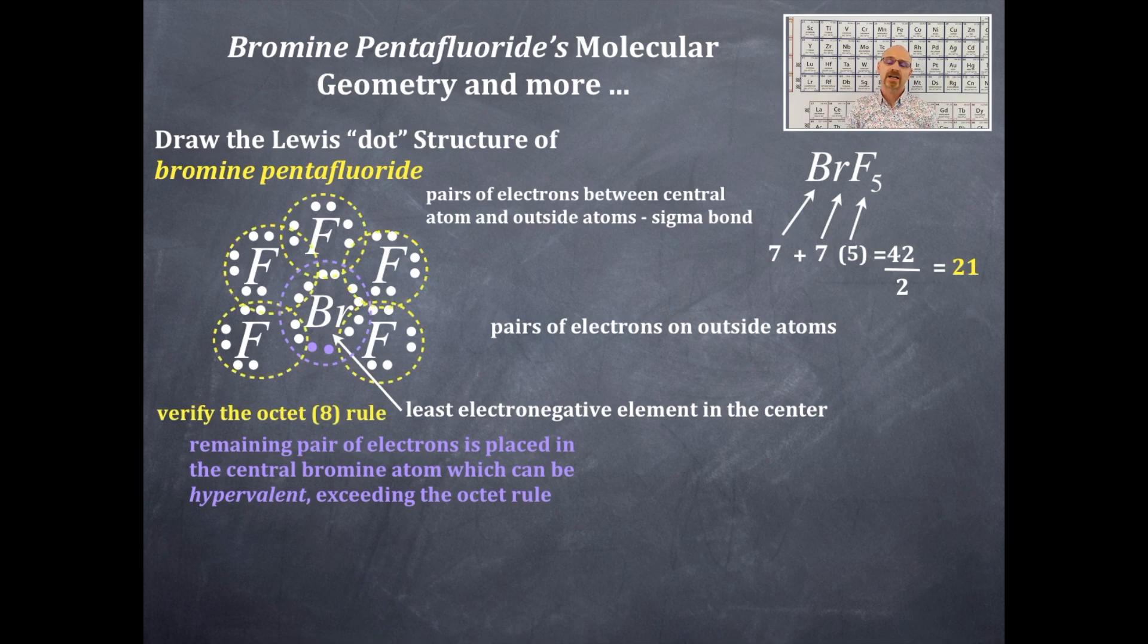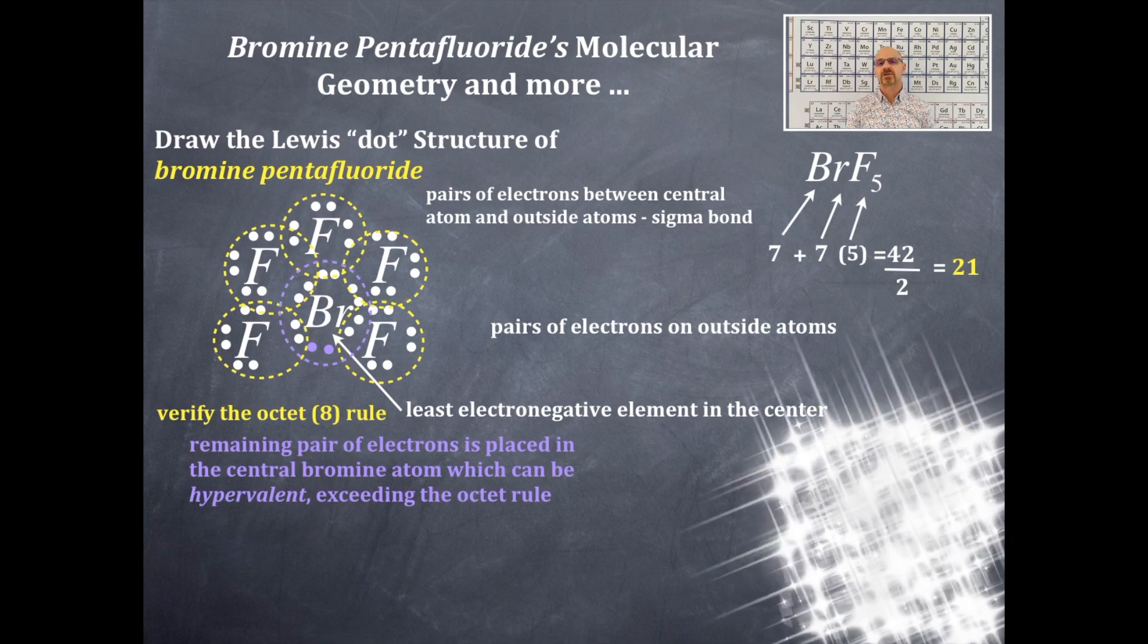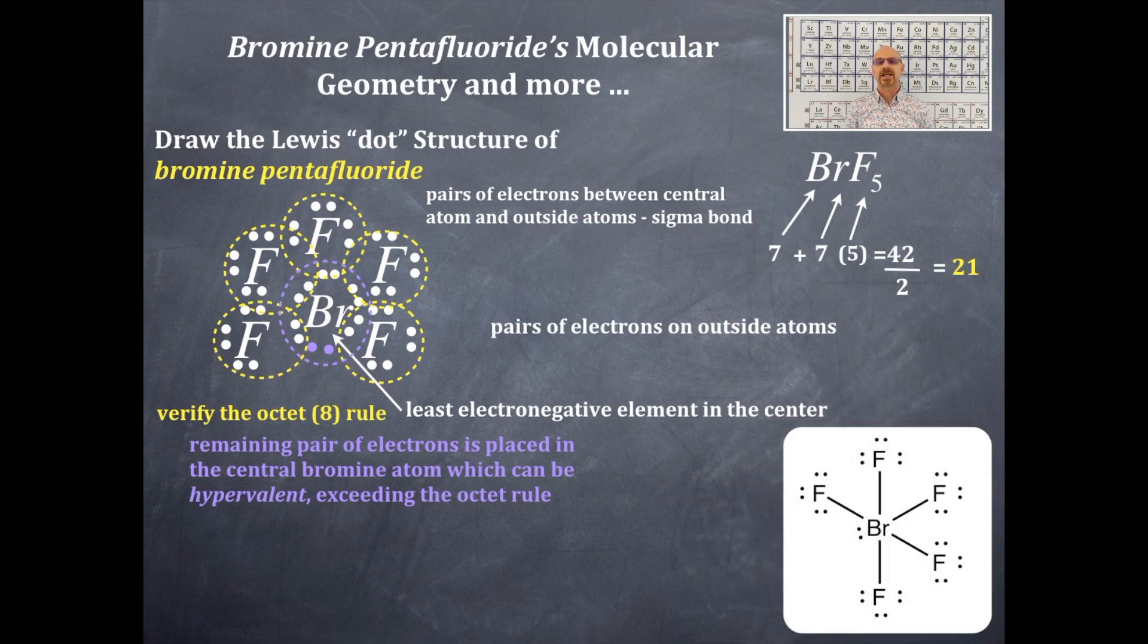We verify the octet rule for fluorine because it's period two and must have an octet. We tidy up this Lewis dot structure, drawing lines for bonding pairs and keeping dots as lone pairs.